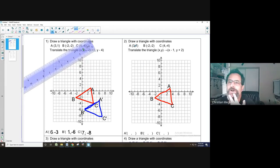So A is going to the left one, up two. Left one, up two. And then B left one, up two. C left one, up two.